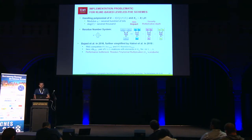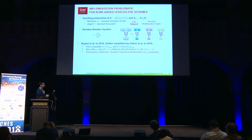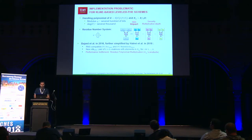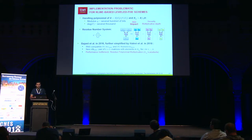In 2016, Bajard et al. proposed a full RNS variant by modifying the decryption function, the multiplication, and relinearization. And this year, Alevi et al. further simplified this variant. We note that the performance bottleneck is still located on the residue polynomial multiplication.